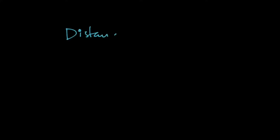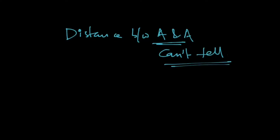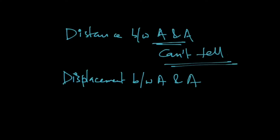If I ask you the displacement between A and A, your answer should be zero, because the initial and final points are the same. If I ask the distance between A and A, your answer should be 'I don't know — you can't tell until you tell me the path.' Displacement depends only on the initial and final points, whereas distance depends on the path traveled.